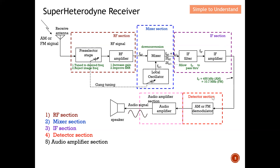The IF filter is a band-pass filter that allows the signal at the IF frequency to pass through. The IF amplifier then boosts the signal large enough before it is sent to the detector. The detector section performs the reverse process of modulation — this is also called demodulation. Whether the signal is AM or FM modulated, the detector converts the modulated signal into the modulating signal.